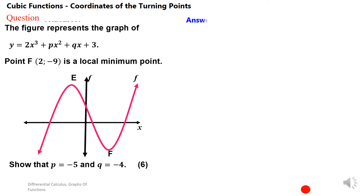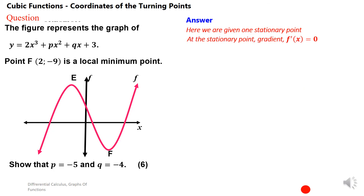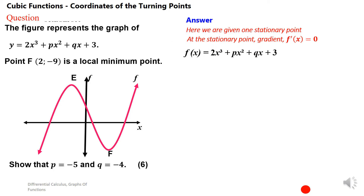What is the important concept we need to remember about turning points? At the turning points, the gradient is always equal to zero — that is very important. In this particular case, we are given the coordinates of the turning point: point F at (2, -9). To solve this problem, we need the idea that at the stationary point, the gradient is always equal to zero.